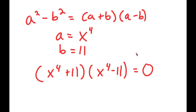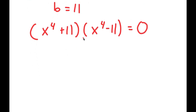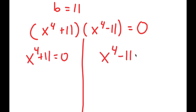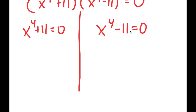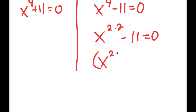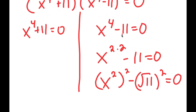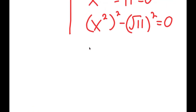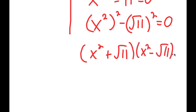From here I get two equations: x to the power of 4 plus 11 equals 0, and x to the power of 4 minus 11 equals 0. We are still not done yet — rather than just adding 11 and taking the fourth root, I'm going to rewrite x to the power of 4 as x to the power of 2 times 2, which equals x to the power of 2 to the power of 2. And 11 I'm going to rewrite as the square root of 11 squared. So now I can use this difference of squares property again, and I get x squared plus the square root of 11 times x squared minus the square root of 11 equals 0.